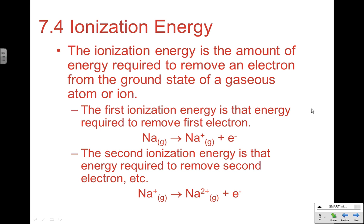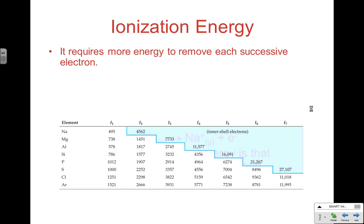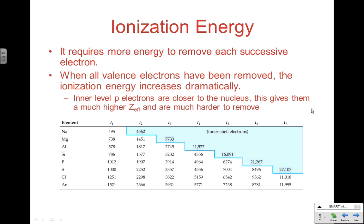How those ionization energies compare is an important idea to analyze. It requires more energy to remove each successive electron, and that should make sense based on concepts of effective nuclear strength. If we've taken away one electron, we've minimized some of the electron-electron repulsion that no longer exists, and the remaining electrons should be held much more strongly by the nucleus. So it makes sense that it should require more energy to remove each successive electron. As we go from first to second to third, there's always an increase in ionization energy.